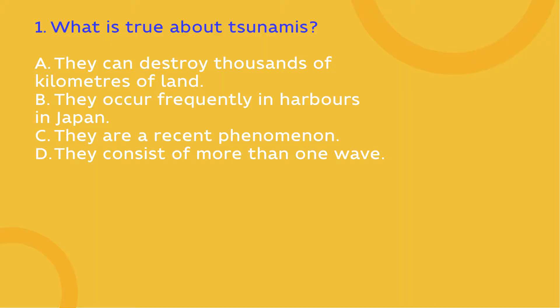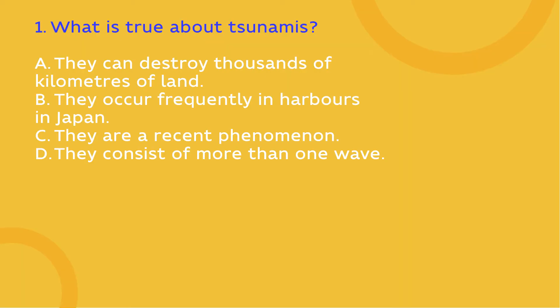Start with reading the first question. You should find the only true option. Now, let's read the options and find the most important words in each of them. In option A, the key words are: destroy, thousands, land. In option B: occur, harbour, Japan. In option C: recent phenomenon. And in option D: consist, more than one wave.